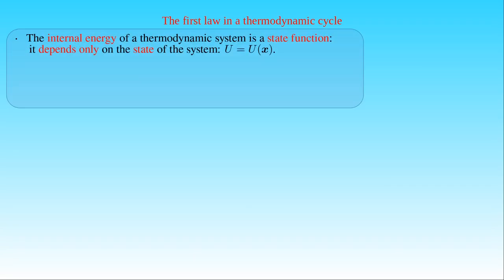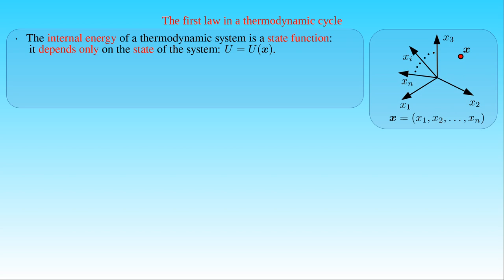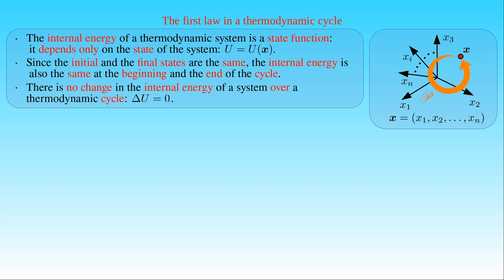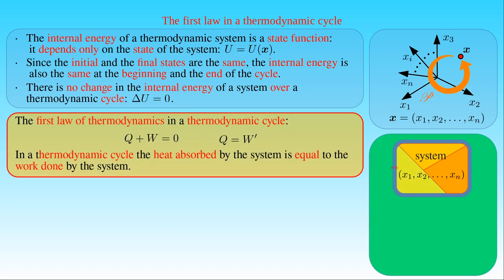We have seen that the internal energy of a thermodynamic system is a state function, that is a unique function of the thermodynamic state. If the state of the system is described by the state vector x in the n-dimensional state space, then the internal energy U can be evaluated at the state vector x. Since the initial and the final states of a system operating in a thermodynamic cycle are the same, the internal energy of the system is the same both at the beginning and the end of the cycle. Although the internal energy of the system can change in the intermediate states along the path, it will have its initial value at the end of the cycle. As a result, the change ΔU in the internal energy is zero, and the first law can be formulated as: the sum of the heat Q exchanged between the system and the surroundings and the work W done on the system by the surroundings vanishes in a thermodynamic cycle. The first law can also be formulated by stating that the heat Q absorbed by the system is equal to the work W' done by the system performing a thermodynamic cycle.